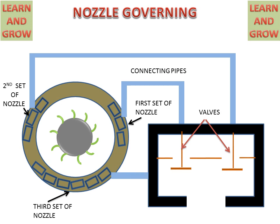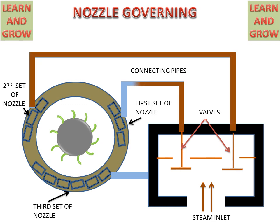At the starting stage, all the valves are open and steam will go through these three connecting pipes and reach the nozzles. The impulse turbine will start rotating with all three openings active.